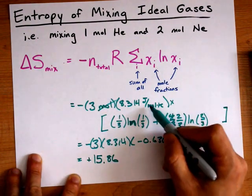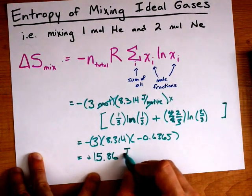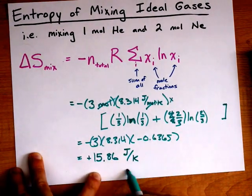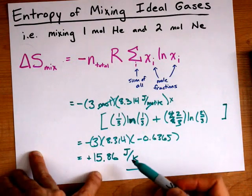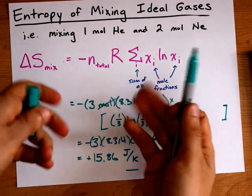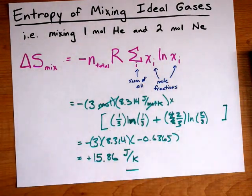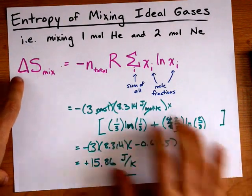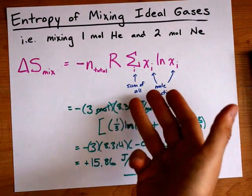The moles cancelled with moles here, and I'm left with joules per kelvin, which you may recognize as the proper unit for entropy. Cool? Cool. It's an easy formula, just as long as you know how to use it.